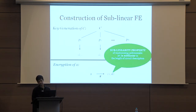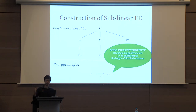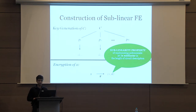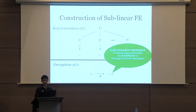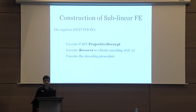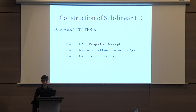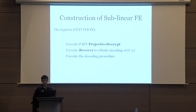One important point is that we want the size of the random string to be small, since we are constructing sublinear FE and require the ciphertext to be sublinear in the circuit length. If the random string were as large as the circuit size, the sublinearity property would be destroyed. So we place the constraint on the randomizing polynomial scheme that the randomness is sublinear in the circuit size. For decryption, you have all the PAFE functional keys and the PAFE ciphertext, execute the projective decrypt algorithm to get encodings of the outputs of the polynomials, then execute the recover algorithm to obtain the randomized encoding of C(X) in the clear, and finally execute the decoding procedure of the randomizing polynomial scheme to get the answer.